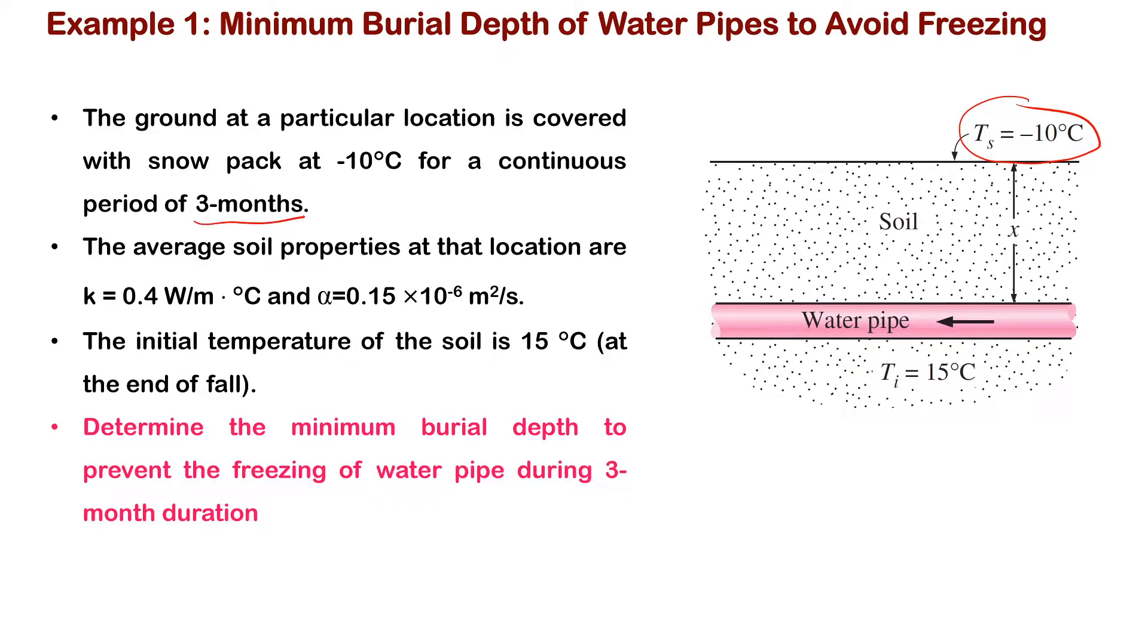And we want to install a water pipeline below the soil to make sure that within three months the water is not going to freeze within the pipe. Let's assume that initially the temperature of the soil is 15 degrees Celsius at the end of fall. Winter starts at minus 10, it remains at minus 10 for three months, and we know the properties of soil - the thermal conductivity and diffusivity.